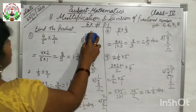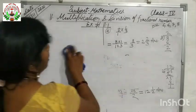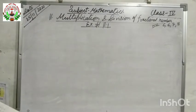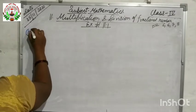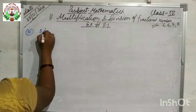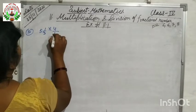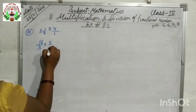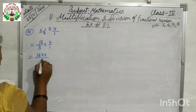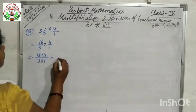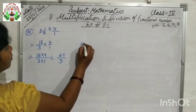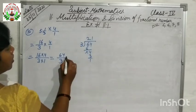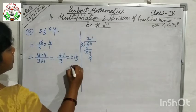Question number 10 is 5 and 1/3 into 4. We write 4 as 4/1. First break the mixed fraction: 3 fives are 15, 15 plus 1 is 16, so 16/3. Multiply: 16 into 4 is 64, 3 into 1 is 3, giving 64/3. Converting to mixed fraction: 3 twenties are 60, 64 minus 63 is 1. The answer is 21 and 1/3.